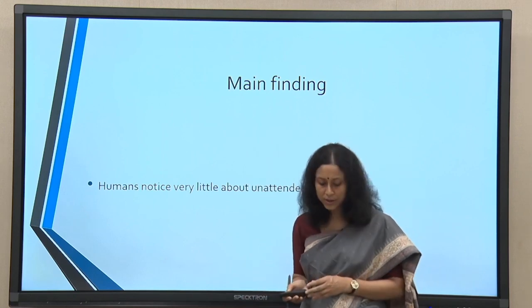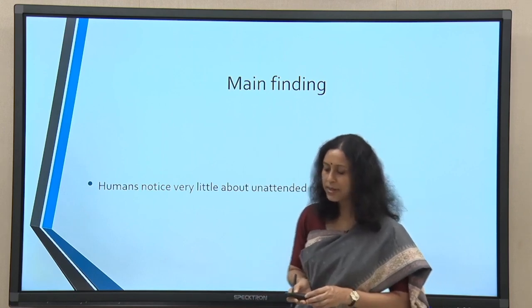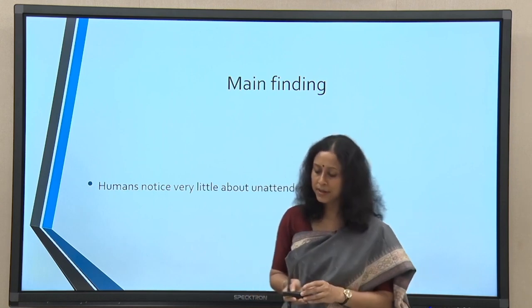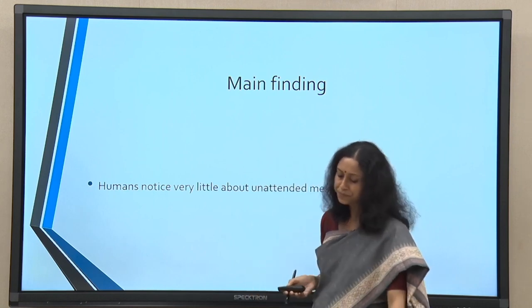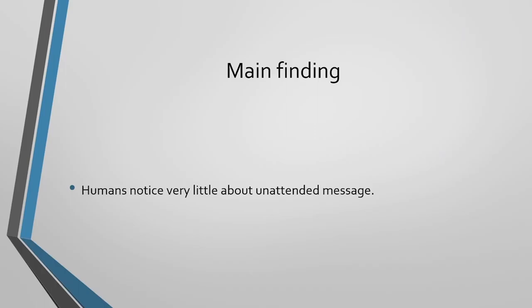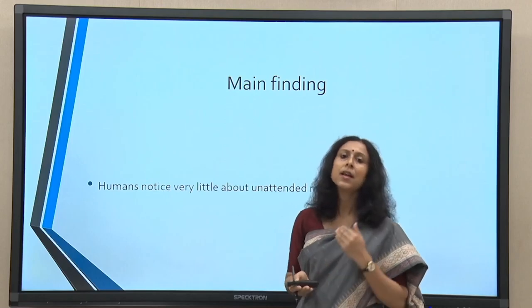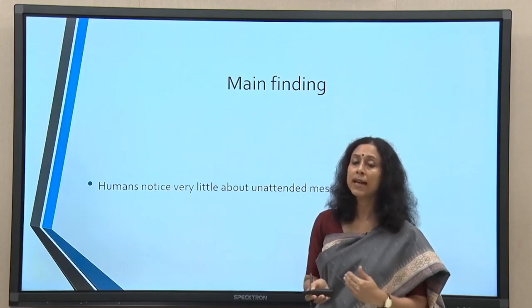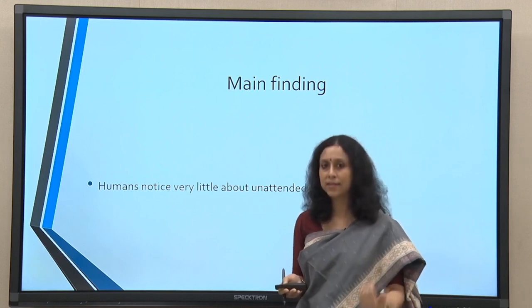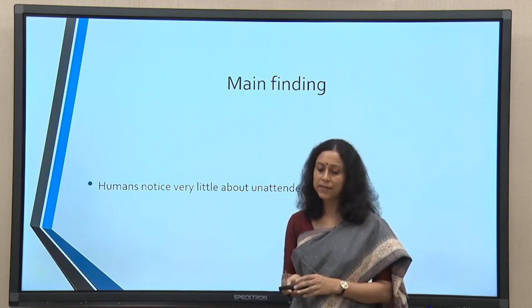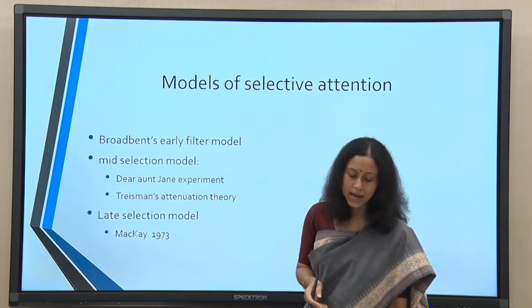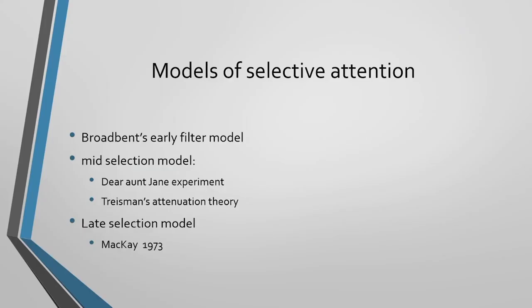Basically, humans notice very little about unattended messages. Attention is important for us to process meaning — in order for us to understand. This is how selective attention was looked at in the beginning years of experimental work. There have been many models of selective attention: Broadbent's early filter model, mid-selection models including Deer and Gen, Treisman's attenuation theory, and Mackey's late selection model from 1973.